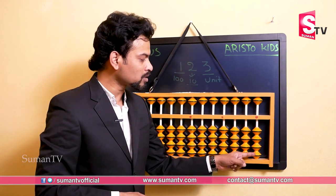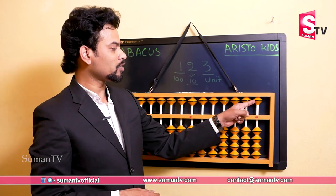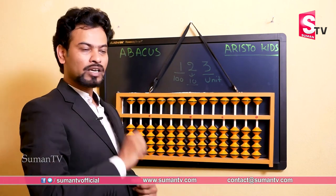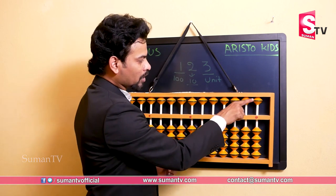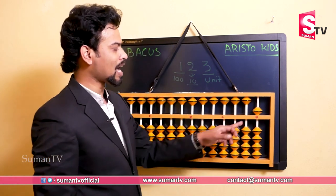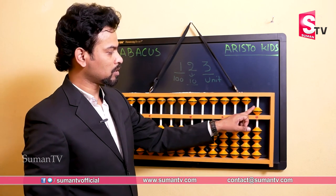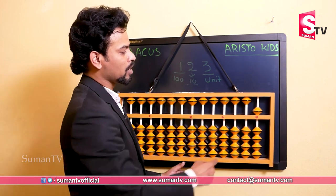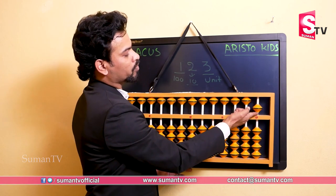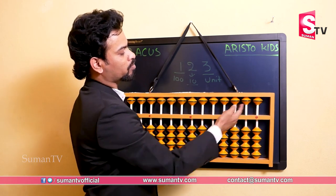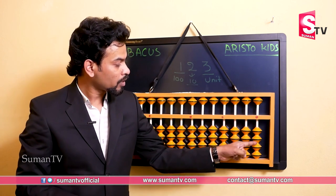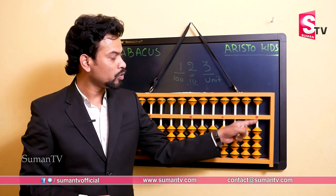Now let's come to the upper bead. These are all one rupee chocolates and this is a five rupees chocolate — a small five star chocolate. Shopkeeper uncle gave you one five star chocolate, so you have five. Moving the upper bead down to touch the beam is plus five, and moving it up away from the beam is minus five. This is the use of the beads in the unit place — each lower bead has a value of one and the upper bead has a value of five.